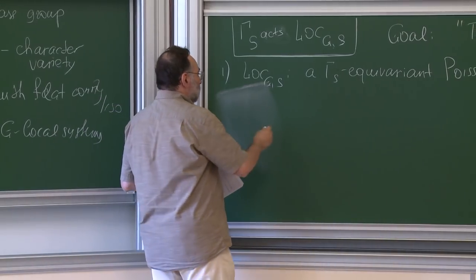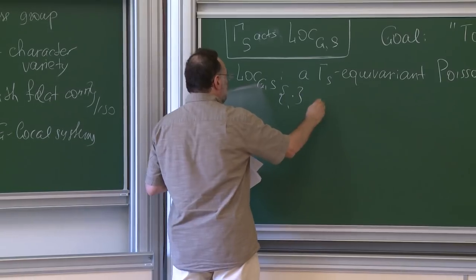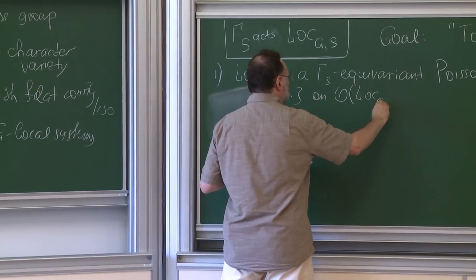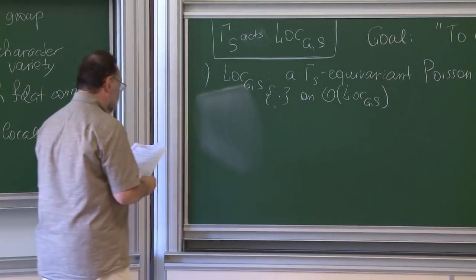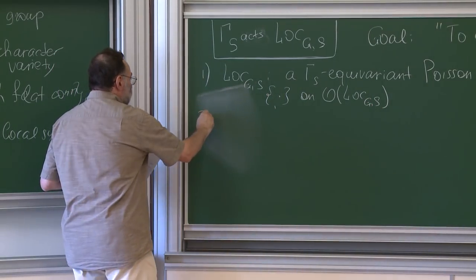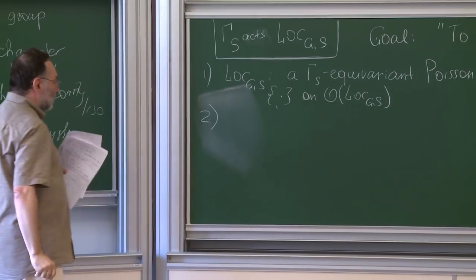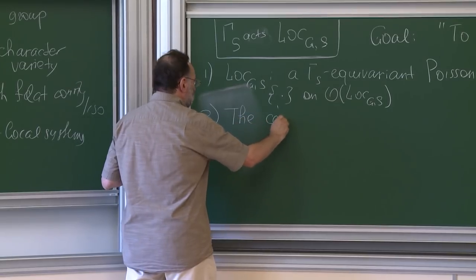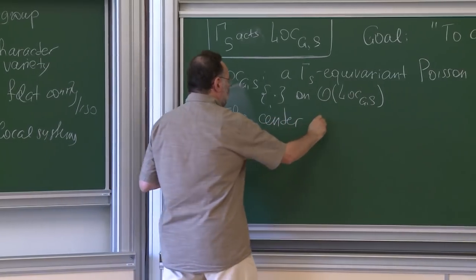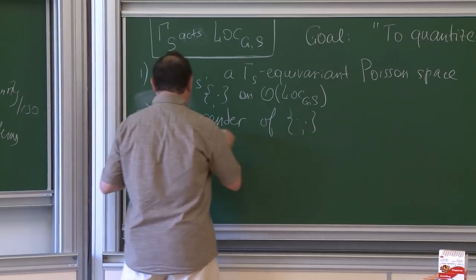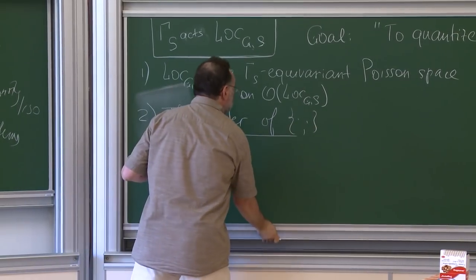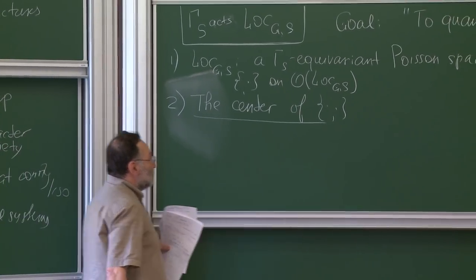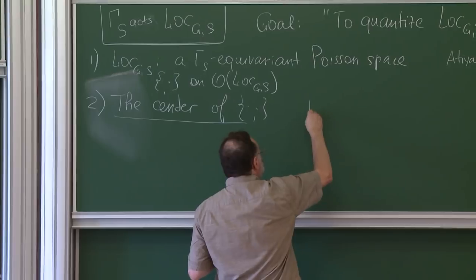It's a Poisson structure. This means we have a Poisson bracket on the space of regular functions. As soon as you have a Poisson structure, the next question is: what is the center of this Poisson bracket? Because that's what controls, to some extent, the quantization. So let me introduce the Cartan group to describe it.